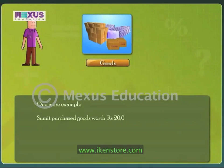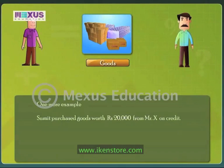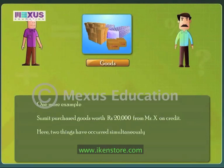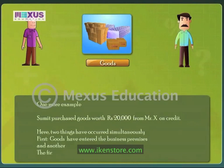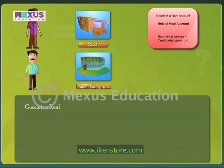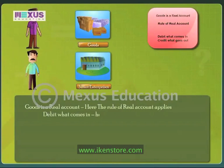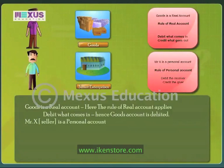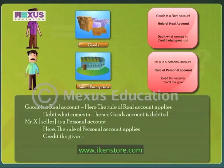One more example: Sumit purchased goods worth 20,000 rupees from Mr. X on credit. Two things occurred simultaneously: goods entered the business premises, and the firm owes the money to Mr. X, the seller. Goods is a real account, so the rule of real account applies — Debit what comes in — hence goods account is debited. Mr. X, the seller, is a personal account, so the rule of personal account applies — Credit the giver — hence Mr. X's account is credited.